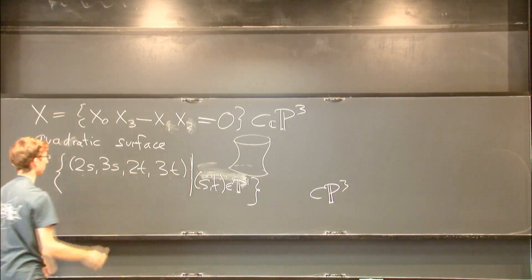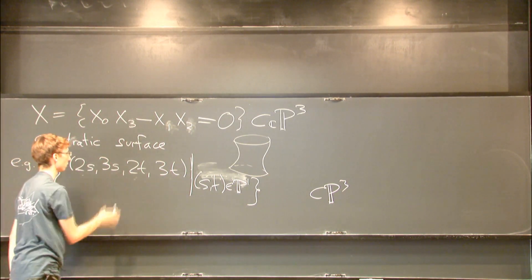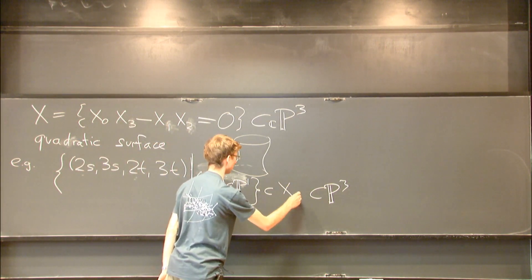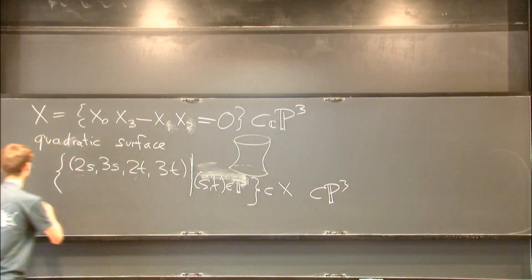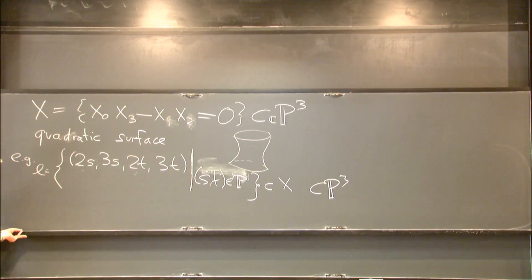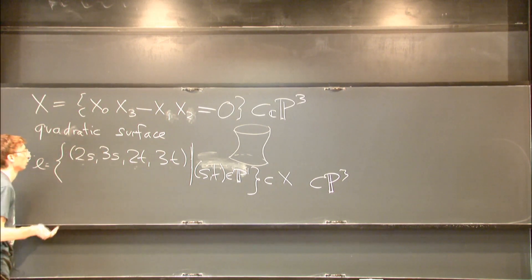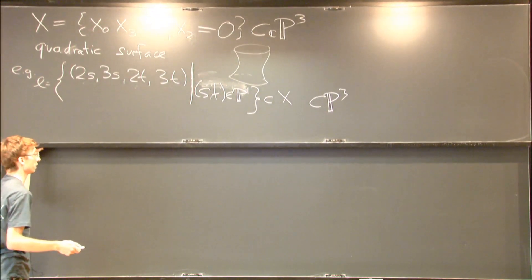And if you multiply x1 by x2, you also get 6st. So this line actually lies on this hypersurface. Lines are only one example of algebraic curves. I'm also interested in studying other curves on this quadratic surface or on other algebraic varieties.